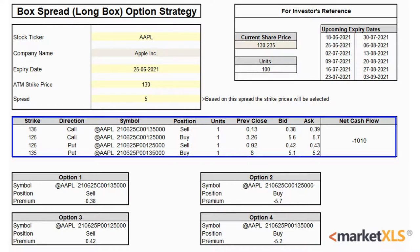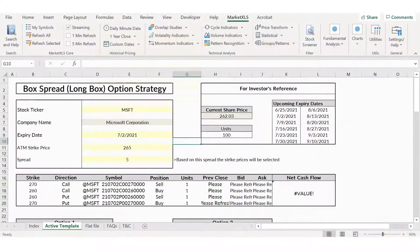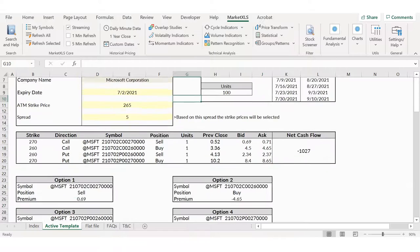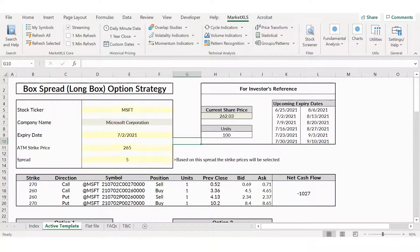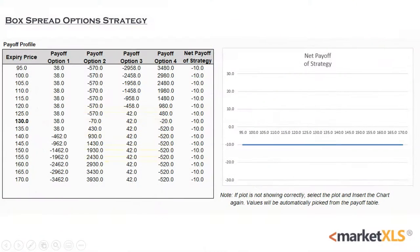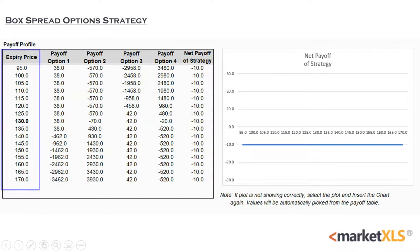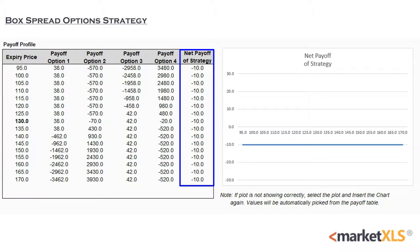The net cash outflow is given on the right. MarketXLS has many templates just like the box spread one you see here, and it refreshes all the data when you click on refresh all. MarketXLS offers a net payoff table and a net payoff diagram to help the user observe the potential profit and loss at different expiry levels. As we can see, the losses are limited to $10 at various expiration levels, which is a unique feature of the box strategy. Hence, exiting timely is a key aspect for getting success.